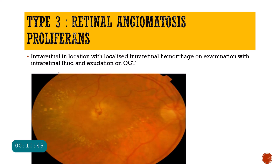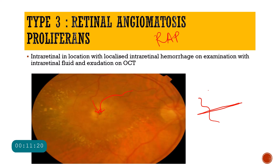Then we have Type 3 CNVM, also called the RAP lesion — retinal angiomatosis proliferans. In retinal angiomatosis proliferans, the vessels grow within the retina and from the retina enter through the RPE and anastomose with the choroid. This is different from the classic teaching of CNVM, where the CNVM comes from the choroid. In retinal angiomatosis proliferans, the vessels come from the retina and form an anastomosis with the choroidal vessels.